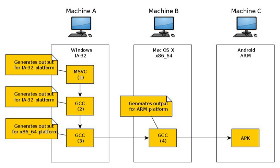In para-virtualization, one computer runs multiple operating systems and a cross-compiler could generate an executable for each of them from one main source.